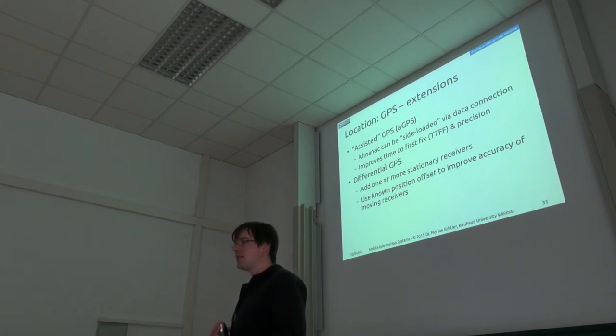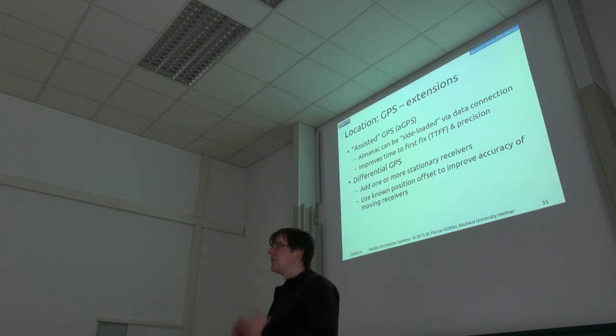So you use a stationary receiver. For example, if you're navigating a ship, then you can usually, most ports have such stationary receivers, which have very good antennas which are mounted on a platform with a clear view of the sky. And then you can use that stationary receiver to correct for errors.